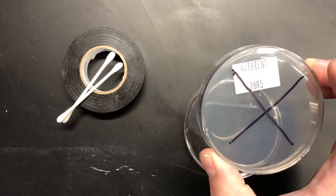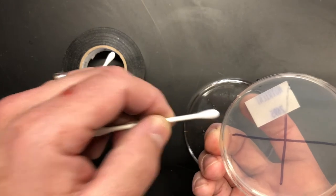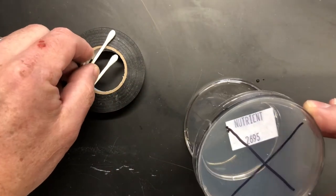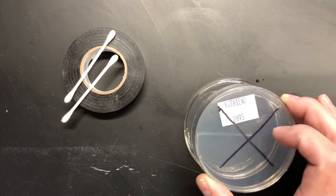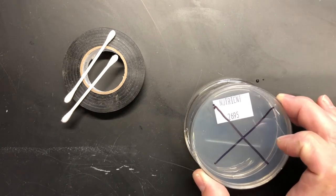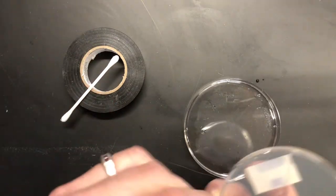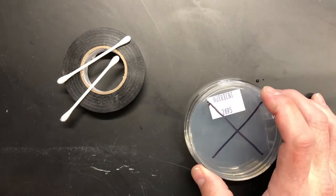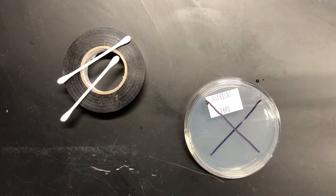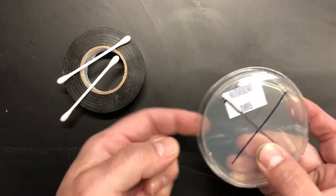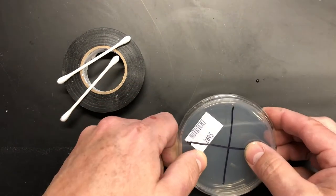This only gets flipped over when you're ready to swab with your q-tip, and then otherwise it stays facing down so that you're protecting your agar as much as possible. Alright, so you've got your quadrant, your student swabs, and then closes it back up. Now this is where a lot of people go wrong. A lot of people will take strips of tape and just tape that closed, and that's not good enough. This needs to be sealed.